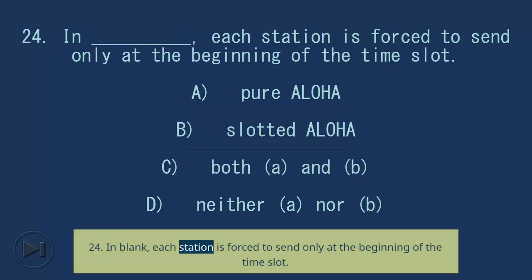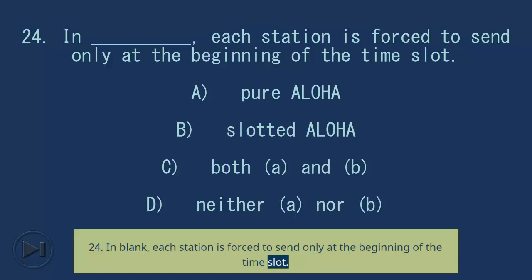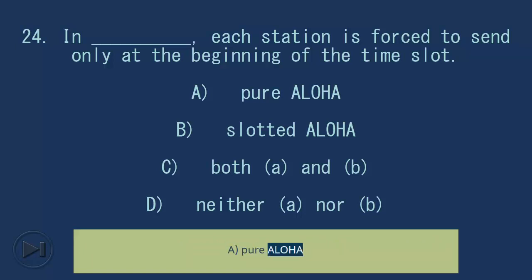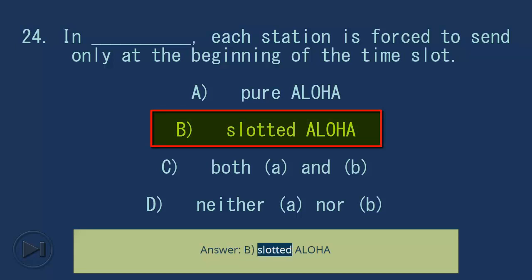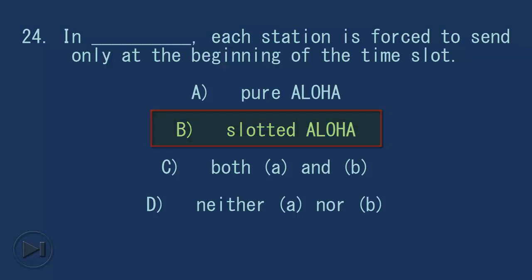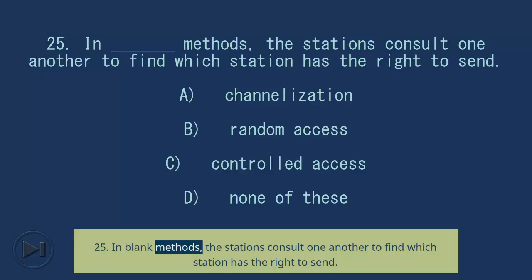Question 24: In blank, each station is forced to send only at the beginning of a time slot. A) Pure Aloha, B) Slotted Aloha, C) Both A and B, D) Neither A nor B. Answer: B) Slotted Aloha.